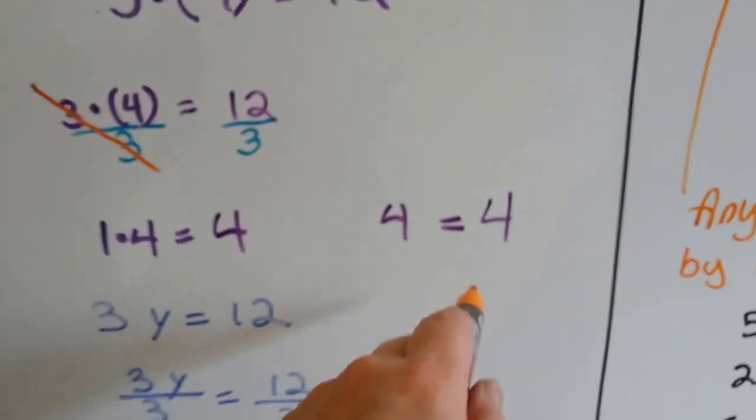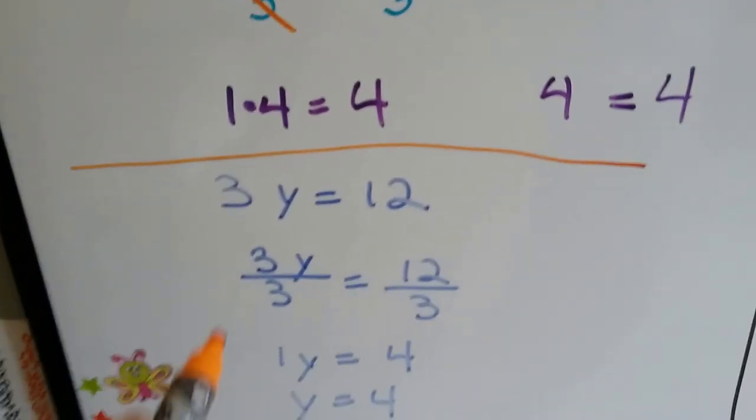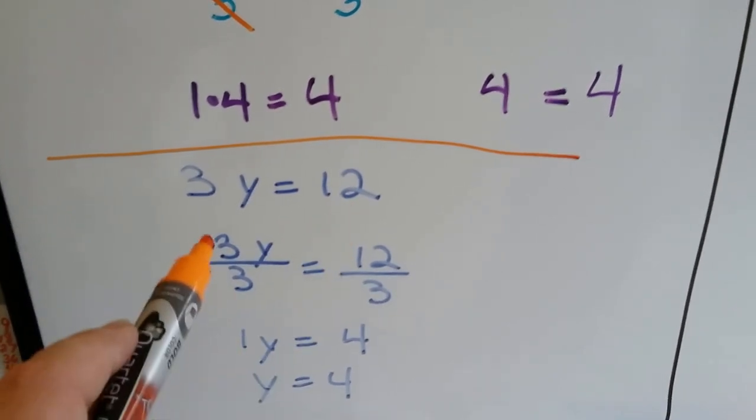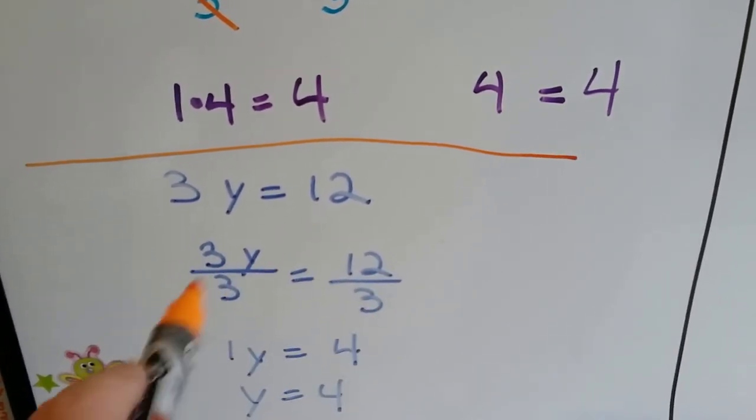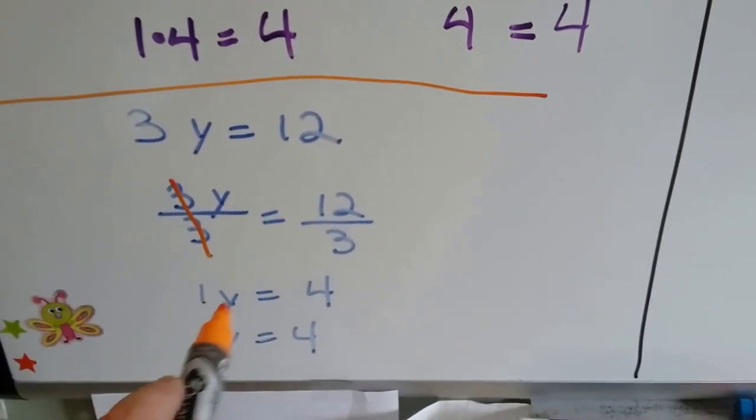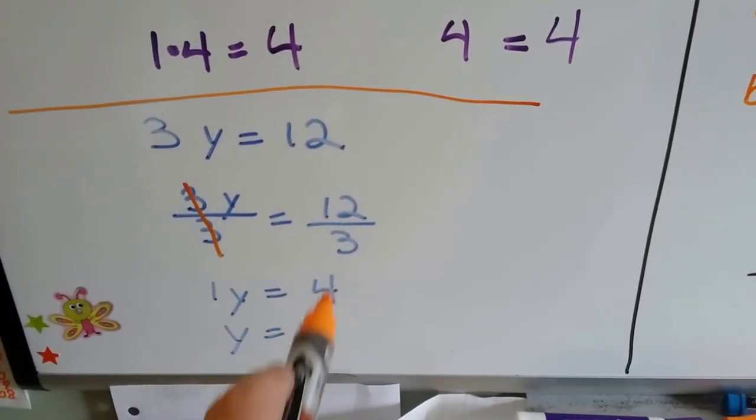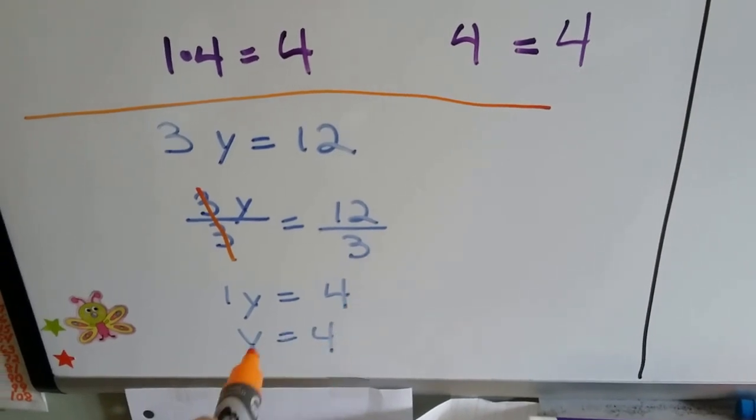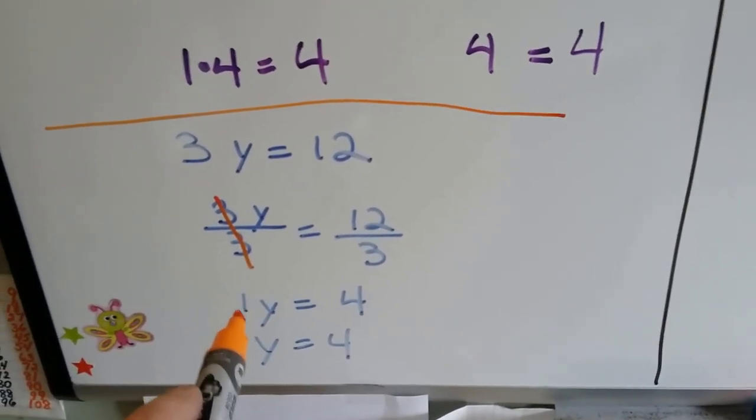So take this example. We've got 3y equals 12. If we divide both sides by 3, this cancels this 3 out, and we end up with y is equal to 4. 12 divided by 3 is 4.